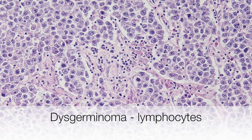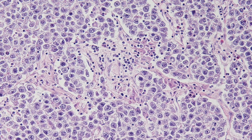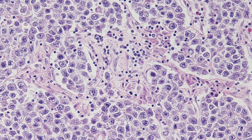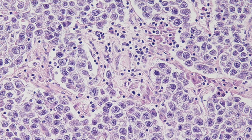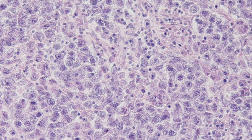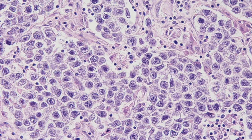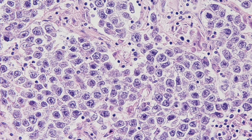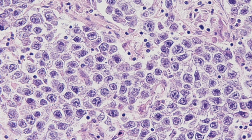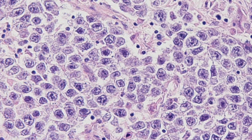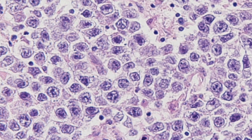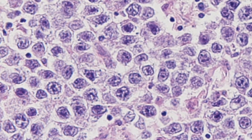Here we can see the tumour arranged in trabeculae and as we zoom in towards the middle of the picture you can see a collection of lymphocytes associated with the tumour. The tumour cells show abundant pale pink cytoplasm, large nuclei, and very prominent purple staining nucleoli.